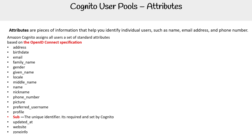If these are familiar, it's because these are basically claims — this is what would show up in your claim information in your JWT. Now does it show all of them? I'm not sure, but this is information that you would see in there.